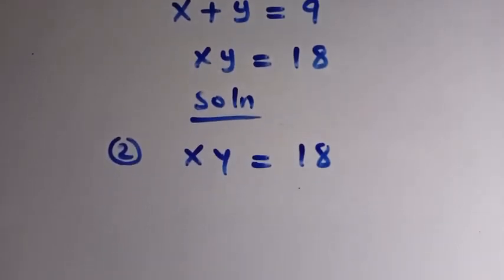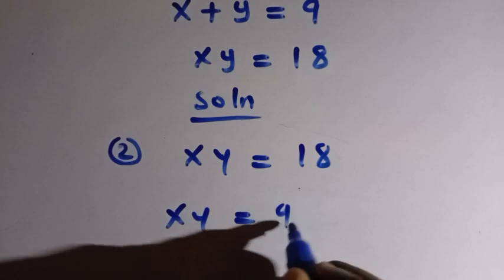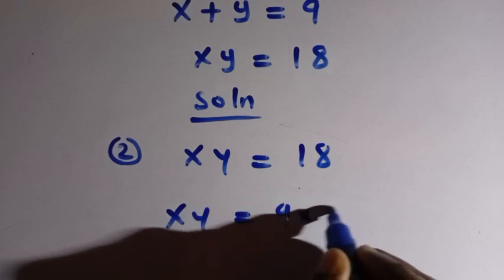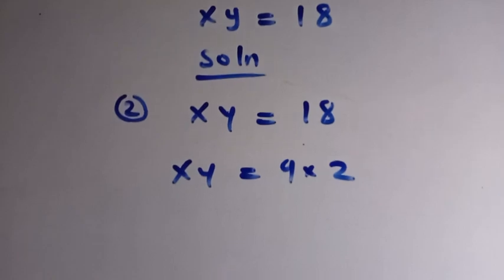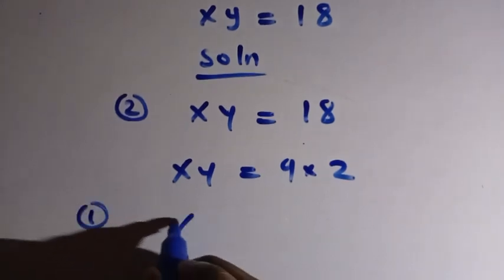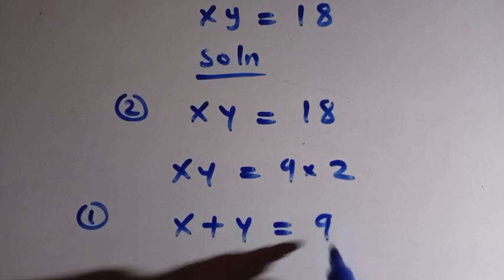Then by this, we know we have xy equals, we can consider this as 9 multiplied by 2. But from our equation 1, we have x plus y equals 9.